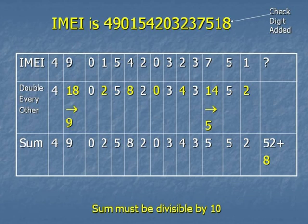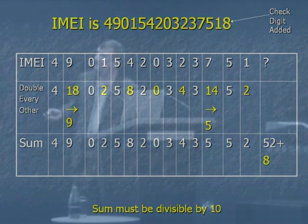The other digits were left alone. Add everything together and you get 52. The check digit is the extra number you need to make that sum divisible by 10. So 52 plus 8 is divisible by 10 — that's the final number on your IMEI. Thank you.